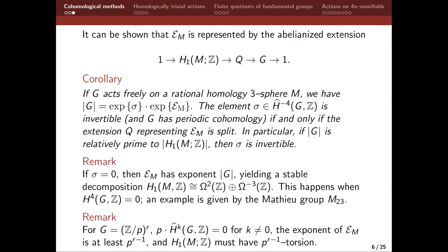For those who like exponents: if you have an elementary abelian p-group, then p annihilates the non-zero Tate cohomology. Then you can see that the exponent of sigma M has to be at least p to the r minus one, because you're building p to the r from a class of exponent p and the exponent of another class. So that tells you that H two of G with coefficient H1 of M over Z has exponent at least p to the r minus one. So it had better have a lot of torsion in it.